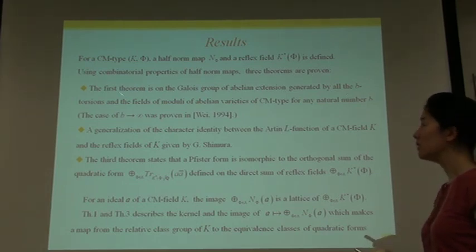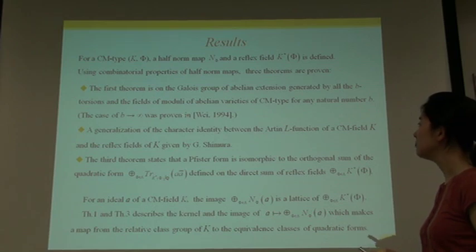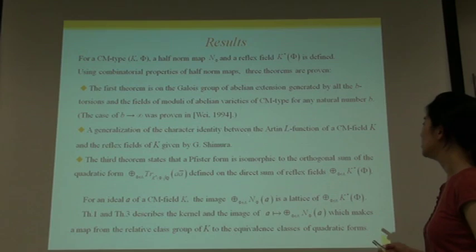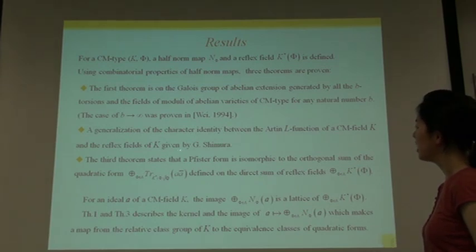The case B equals infinity was proven in Shimura's paper, but a proof is different from his. The second theorem is the generalization of the character identity between the abelian L-function of CM-field K and the reflex fields of K, pointed out originally by Goro Shimura.